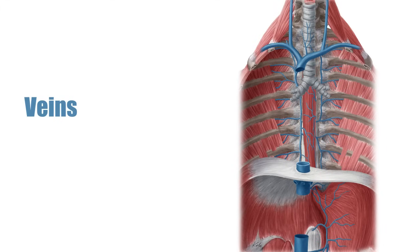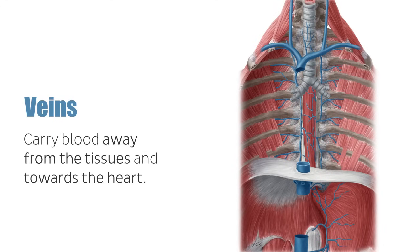Veins carry blood away from the tissues and towards the heart, and have thin walls. Their internal lumen is larger than that of the arteries due to the fact that they contain blood under low pressure. They also have valves that prevent the blood from flowing backwards.